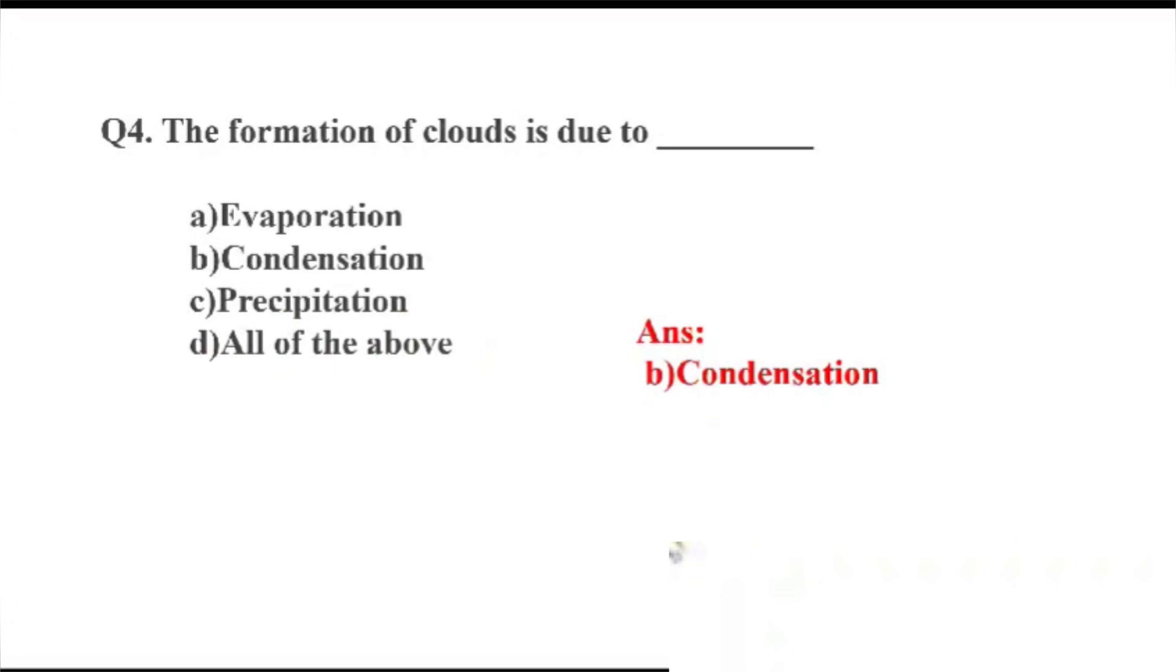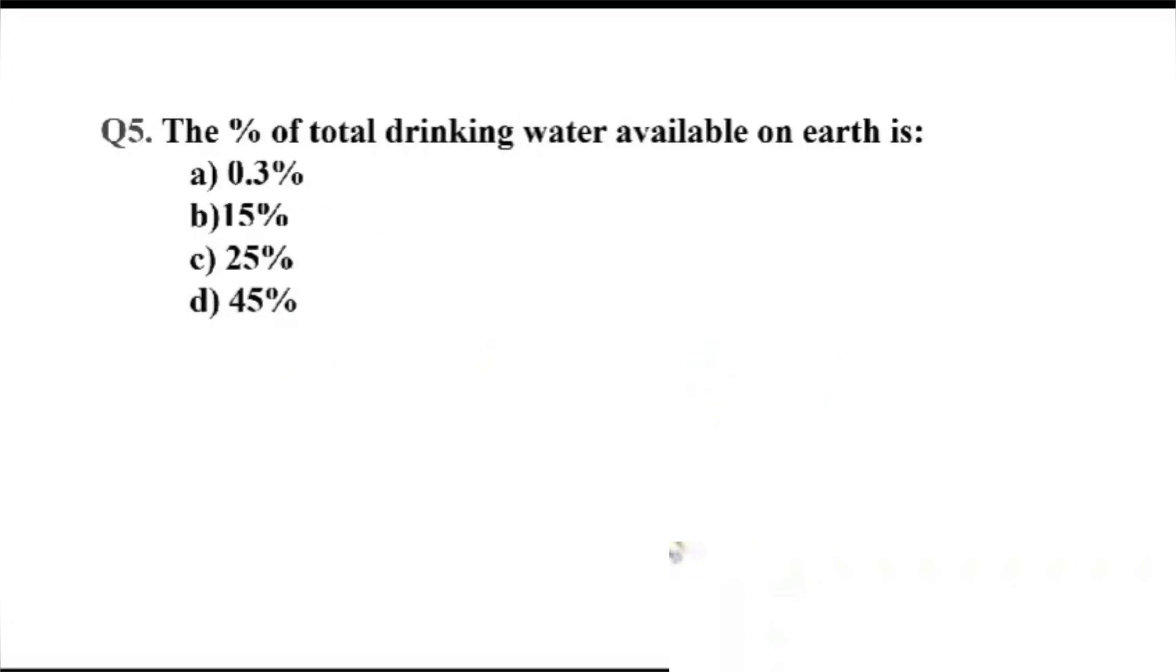Question number 5. The dash percentage of drinking water available on earth. Option A, 0.3%. B, 15%. C, 25%. D, 45%. The right answer, Option A, 0.3%.